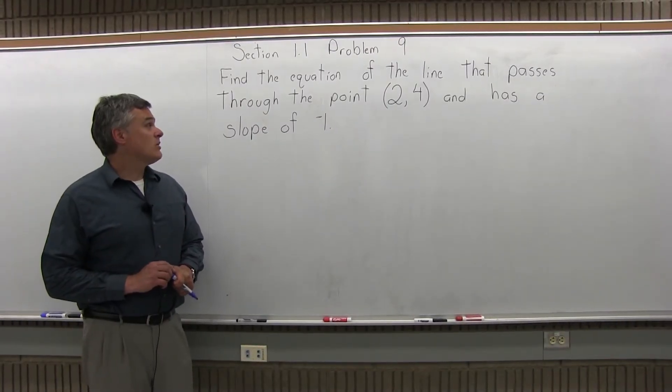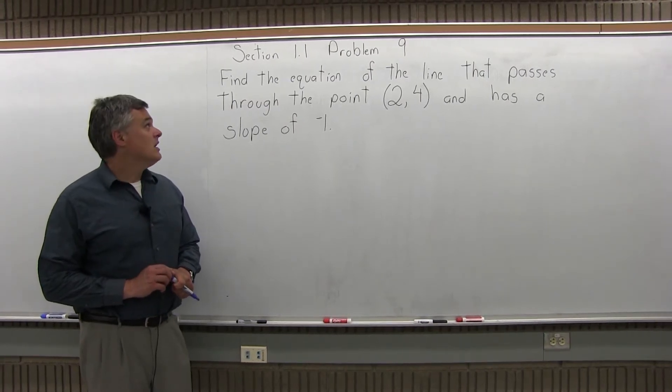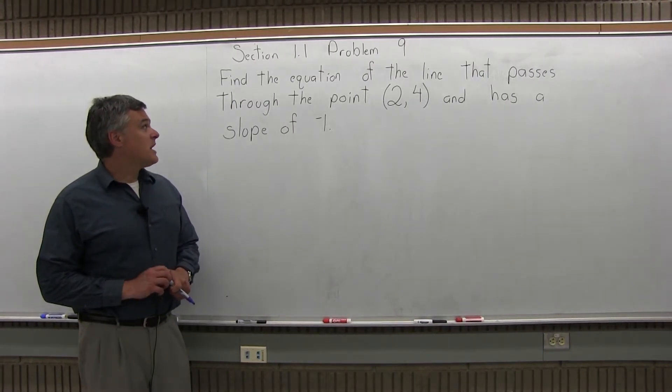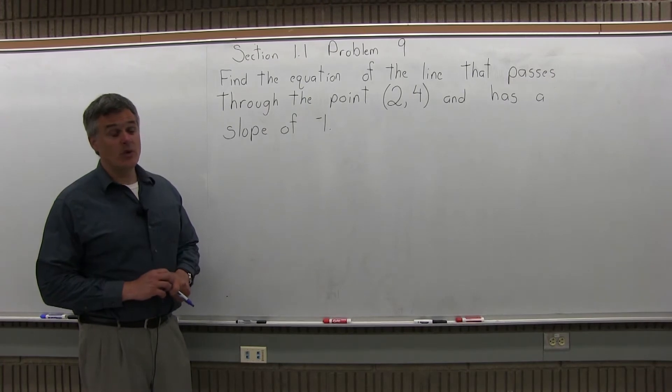This is Section 1.1, Problem 9 from the homework. Find the equation of the line that passes through the point (2,4) and has a slope of negative 1.